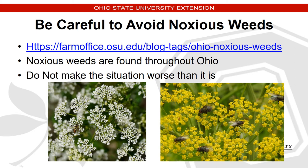When selecting plants, we absolutely need to avoid ones classified as noxious weeds. There is a list of Ohio noxious weeds available on an OSU website called the Farm Office, which has a blog listing current Ohio noxious weeds. We should avoid those whenever selecting plants for attracting insects. Unfortunately, noxious weeds are found throughout Ohio — some incredibly prevalent, others found only in certain locations. Don't make the situation worse by propagating these plants. The two shown here are poison hemlock on the left and wild parsnip on the right; both are very attractive to all kinds of insects, but we don't need to increase their numbers.